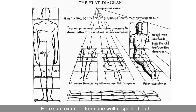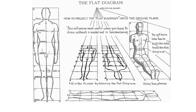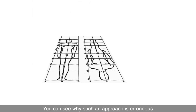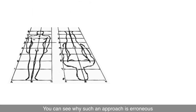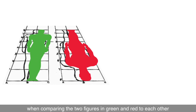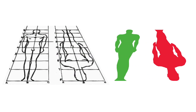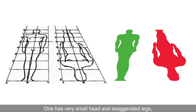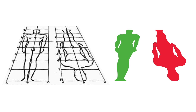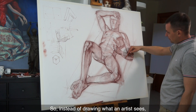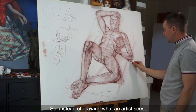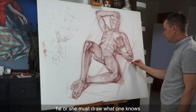Here's an example from one well-respected author who teaches drawing figures using common one-point perspective. You can see why such an approach is erroneous when comparing the two figures in green and red to each other. One has a very small head and exaggerated legs, while the other has a huge upper body. So, instead of drawing what an artist sees, he or she must draw what one knows.